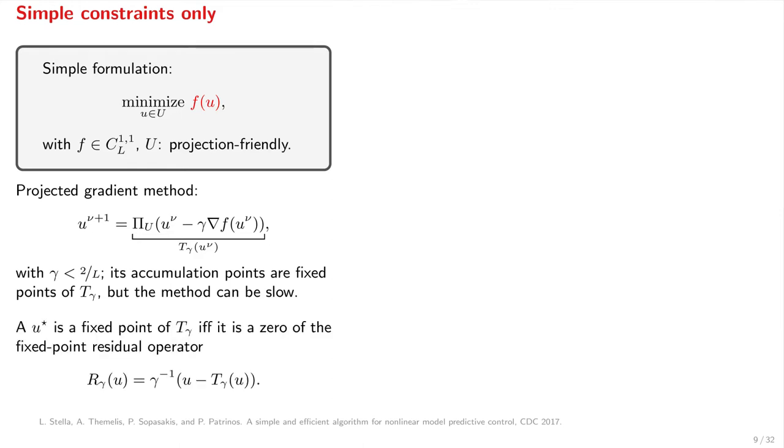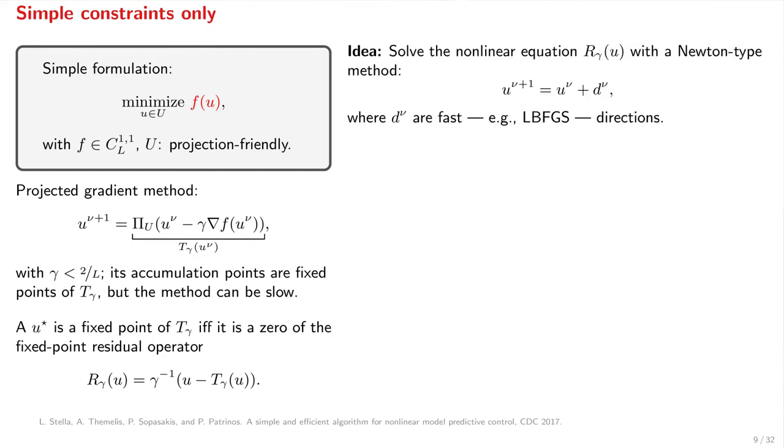it is known that accumulation points are stationary points, but convergence can be slow. We can phrase the same problem a little differently. Instead of looking for a fixed point of T gamma, we can define the fixed point residual operator R gamma. Clearly, a fixed point of T gamma is a zero of R gamma. This allows us to employ a Newton-type method to solve this nonlinear equation and choose fast quasi-Newtonian directions using, for example, LBFGS. Unfortunately,